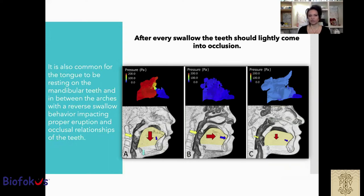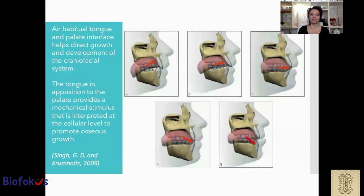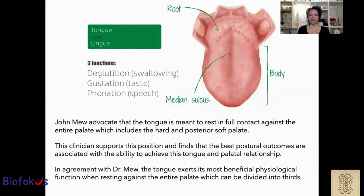You can see in the image the different tongue postures creating different kinds of malocclusion. Habitual tongue and palate interface help direct growth and development of the craniofacial system. The tongue, in opposition to the palate, provides a mechanical stimulus that is interpreted at the cellular level to promote osseous growth. John Mew advocated that the tongue is meant to rest in full contact against the entire palate, including the hard and posterior palate. This position is supported, finding that the best posture outcomes are associated with the ability to achieve this tongue and palate relationship. The tongue exerts its most beneficial physiological function when resting against the entire palate, which can be divided into thirds.